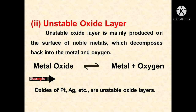Unstable oxide layers are mainly produced on the surface of noble metals, which decompose back into the metal and oxygen. The metal oxide gives an irreversible reaction back to metal plus oxygen. Examples of unstable oxide layers include oxides of platinum and silver.